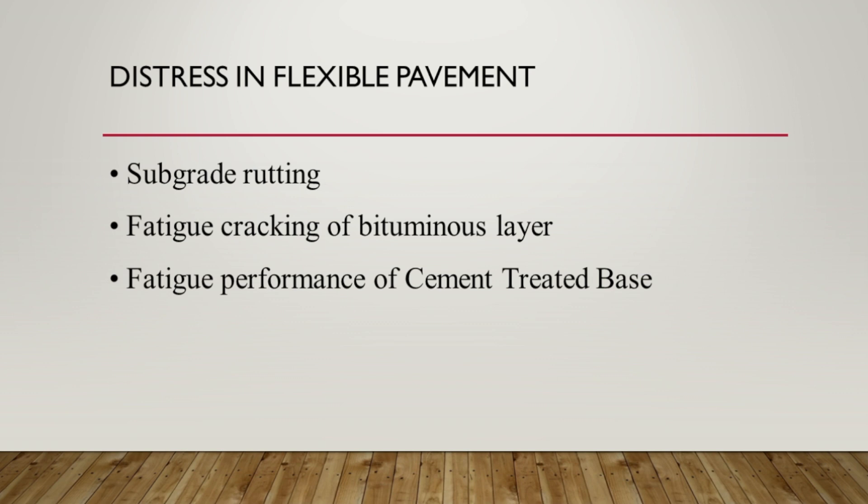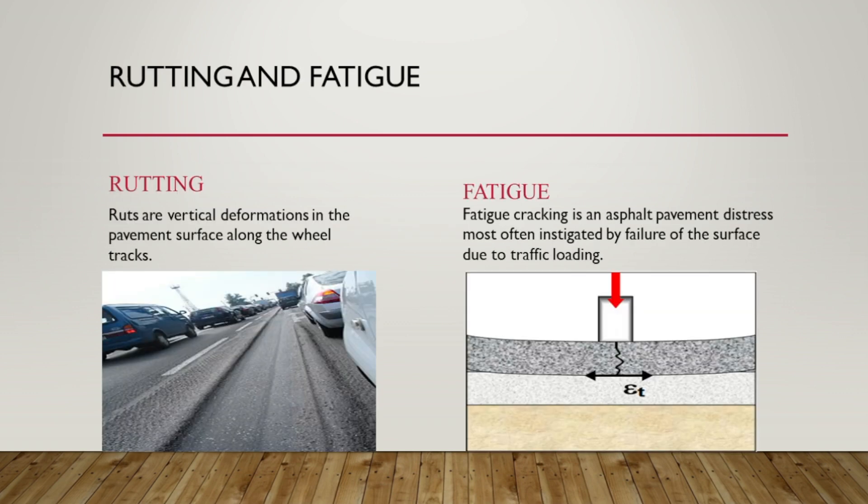Rut is a vertical deformation along the wheel path due to continuous loading that causes excessive strain. Whereas in fatigue cracking, there are a series of interconnected cracks caused due to the repeated cycles of traffic load.